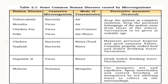Malaria is caused by protozoa and transmitted by the mosquito as a carrier. Preventive measures include using mosquito nets and repellents, spraying insecticides, and controlling mosquito breeding by not allowing water to collect in the surroundings.